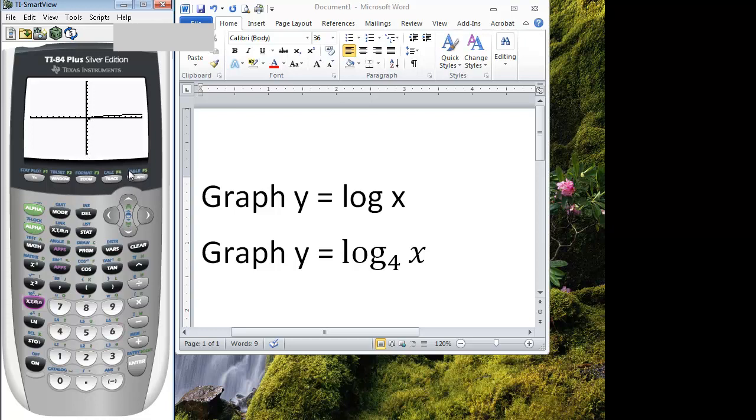So we can go to our table. All we have to do is press the second button and table in order to access that. And as you can see, there's an error on the other side because we cannot take the log of a negative number. So the first point that you actually read is 1, 0.